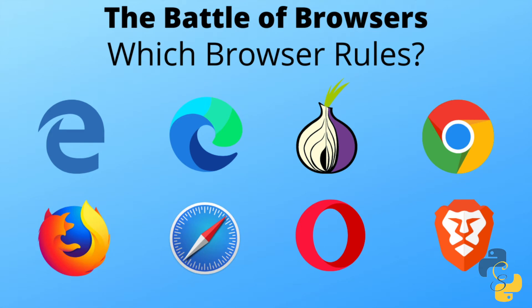Hello and welcome, coders and learners, to this lesson on Coding with Sean. My name is Sean and I will be your instructor today. In this lesson, we will compare eight different browsers and their capabilities, including their upsides and downsides. Those browsers include the old Microsoft Edge, the new Microsoft Edge, the Onion Router — better known as Tor — Google Chrome, Mozilla Firefox, Apple's Safari, Opera, and Brave.